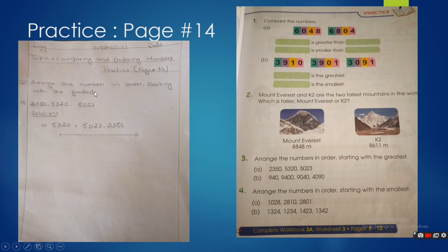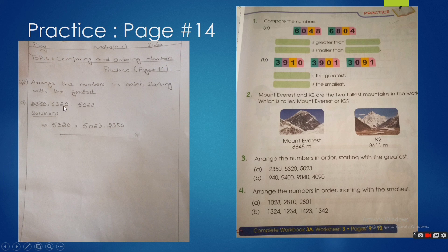Question: arrange the numbers in order starting with the greatest. Part A: 2350, 5320, and 5023. First, compare the thousands place digits. Here we have 5 and 5, which are both greater than 2. Since the thousands digits of 5320 and 5023 are the same, we look at the hundreds place — 3 is greater than 0, so 5320 is the greatest. Then comparing 5023 and 2350, 5 is greater than 2, so the order is 5320, 5023, 2350.